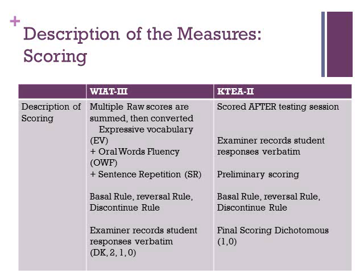A key difference between the two measures is that the KT-2 test is scored after the testing session. Basal and discontinue rules are based on preliminary item scores; after completing the item set, preliminary scores are counted to decide if testing should continue. These preliminary scores are recorded next to the items but are only used for test administration and are re-evaluated during final scoring. For the final scoring of the KT-2, the examiner uses detailed criteria provided by the publisher, with each item scored dichotomously as 1 or 0.